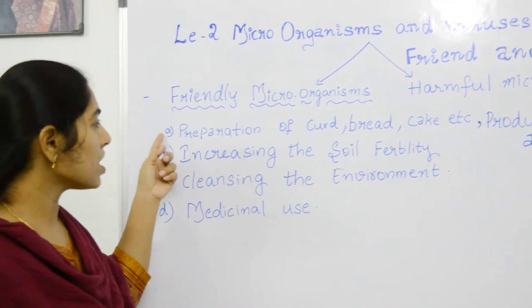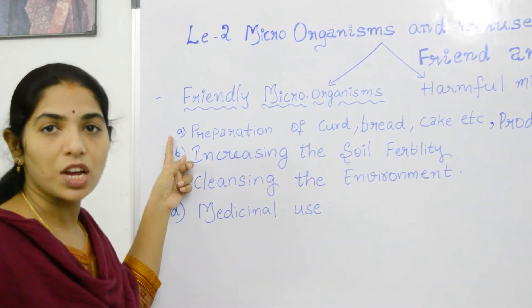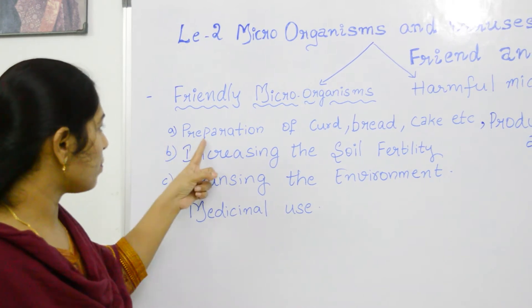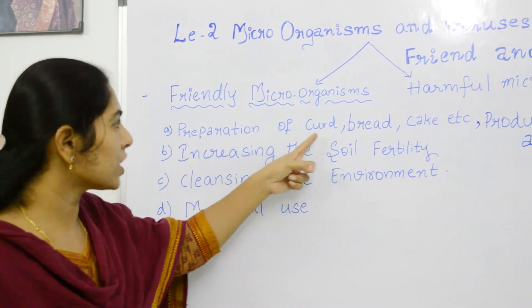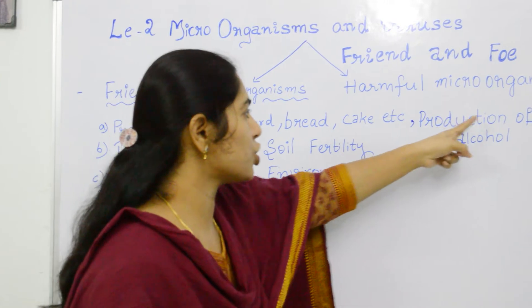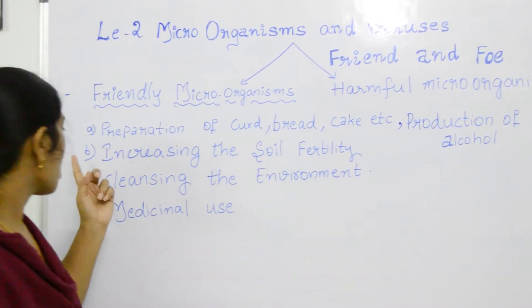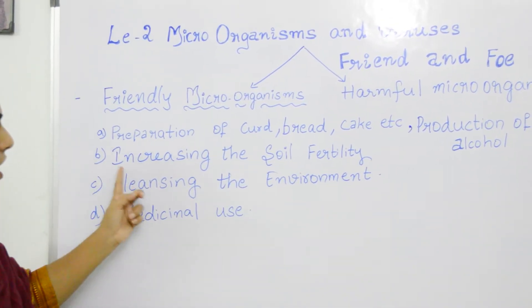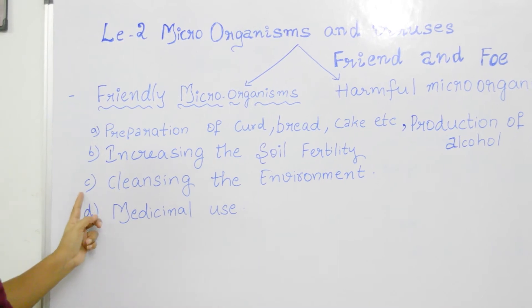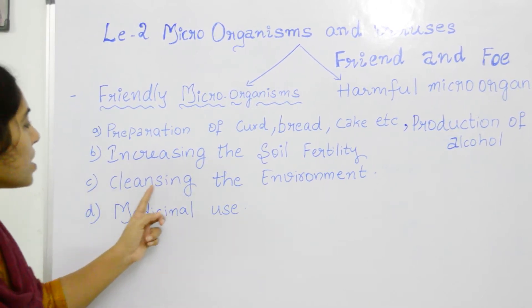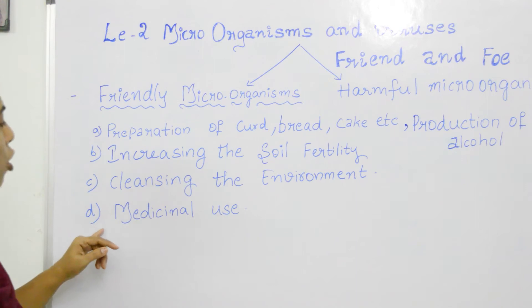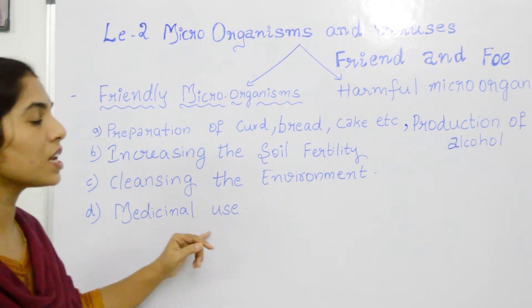Here are some areas where microorganisms are useful to us. The first one is preparation of curd, bread, cake, etc., and production of alcohol. Second, increasing the soil fertility. Third, cleansing the environment. Fourth, medicinal use. All these we have already discussed.